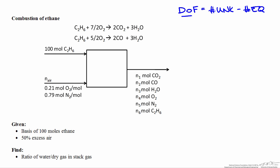The degrees of freedom is equal to the number of unknowns minus the number of equations that we can write to relate them. This analysis is important — we want zero degrees of freedom so that we can ensure we have enough equations to solve for all the unknowns in the process. We can apply this analysis to both the molecular species and the atomic species.